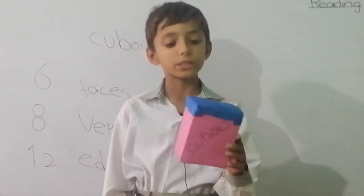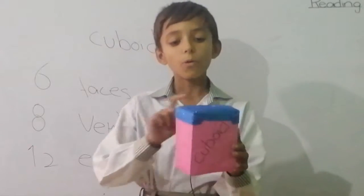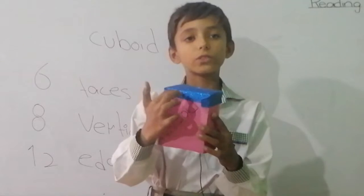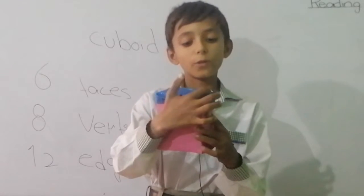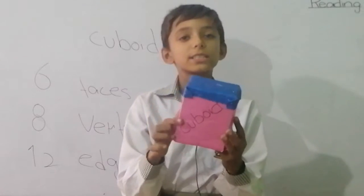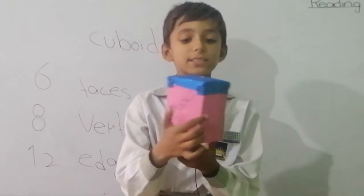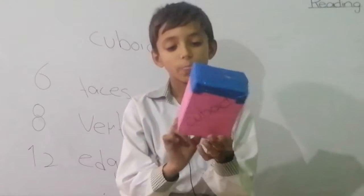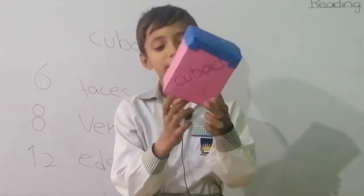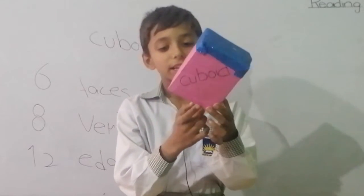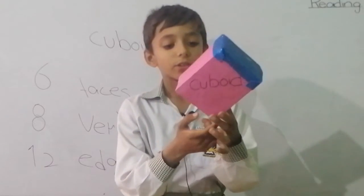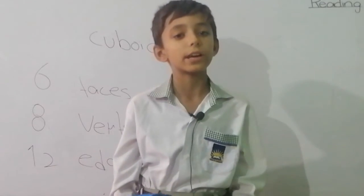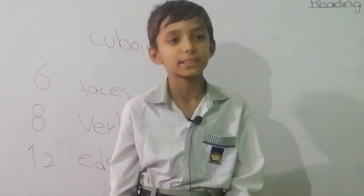Cuboid has 12 edges. Now I will show you: 1, 2, 3, 4, 5, 6, 7, 8, 9, 10, 11, and 12. Cuboid has 12 edges. Thanks.